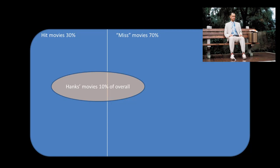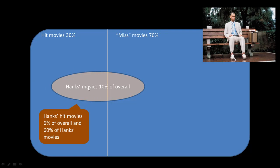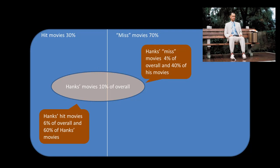A good percentage of his movies are hits, and his hit rate is much better than the average. Let's say his hit movies are 60% of his movies — if you randomly choose a Hanks movie, there's a 60% chance it's a hit, as opposed to the overall 30%. Translating that into area: the hit movies of Tom Hanks occupy 6% of the total area, because it's 60% of 10%. So this region representing Tom Hanks hit movies is 6% of the total, and Tom Hanks miss movies represent 4% overall, or 40% of his movies.